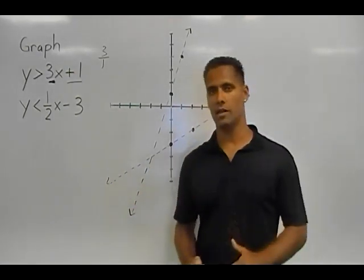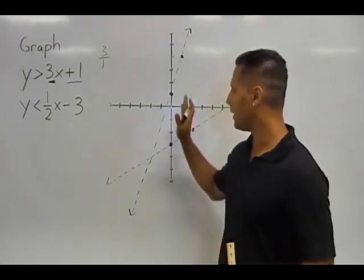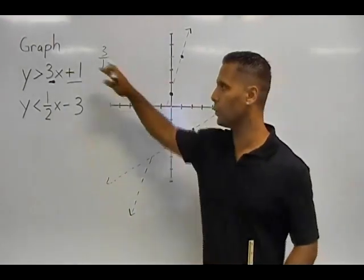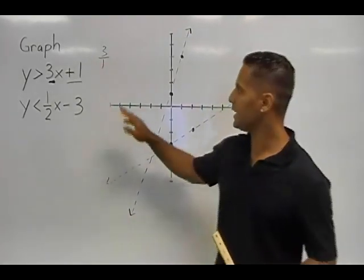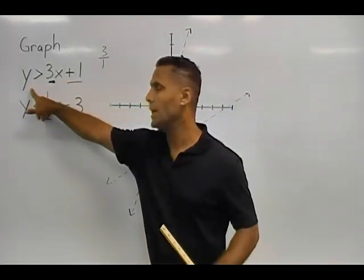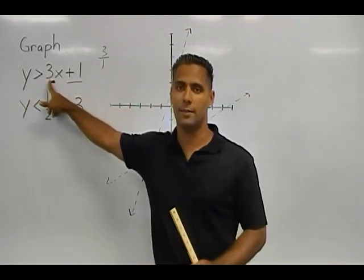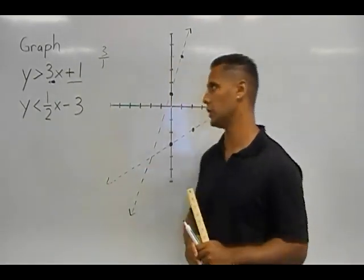Once we have our two inequalities graphed, we actually have to shade what part of the graph would actually work for that specific inequality. What I mean by that is, if I could take any point on this coordinate plane and then plug in the x and y value, it would have to be a true statement. If it was a false statement, then I would have incorrectly shaded my system of inequality. So let's take a look.